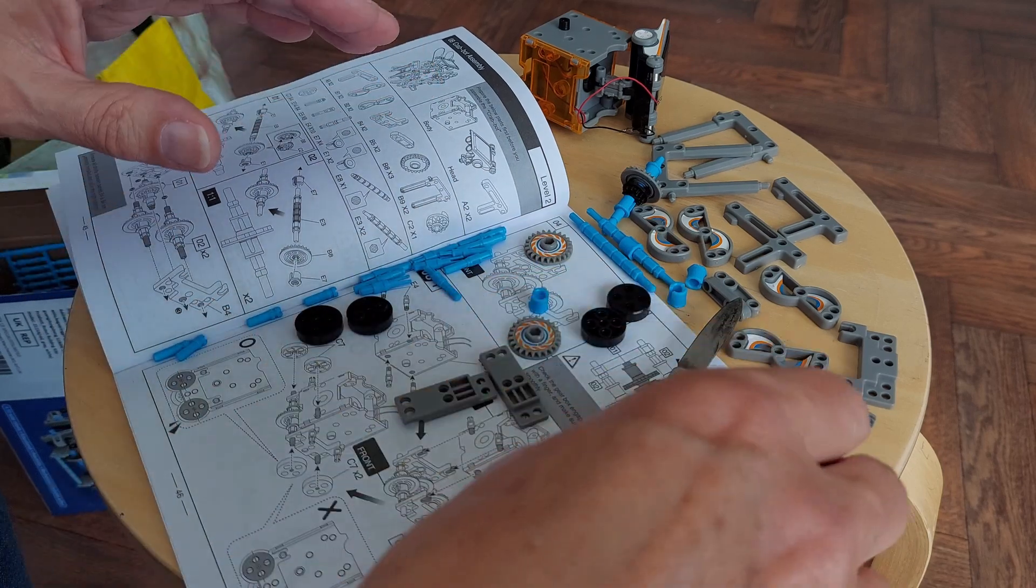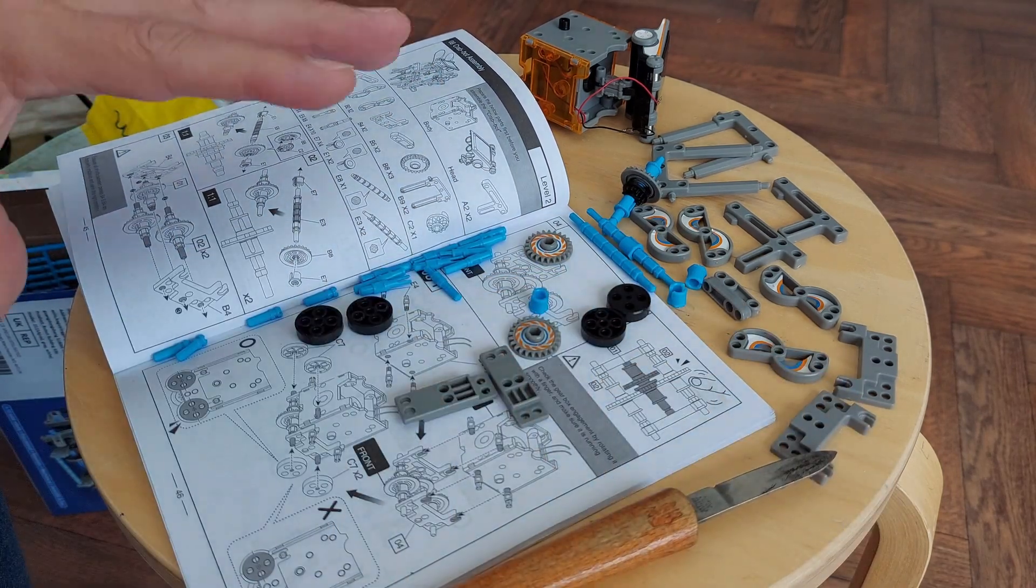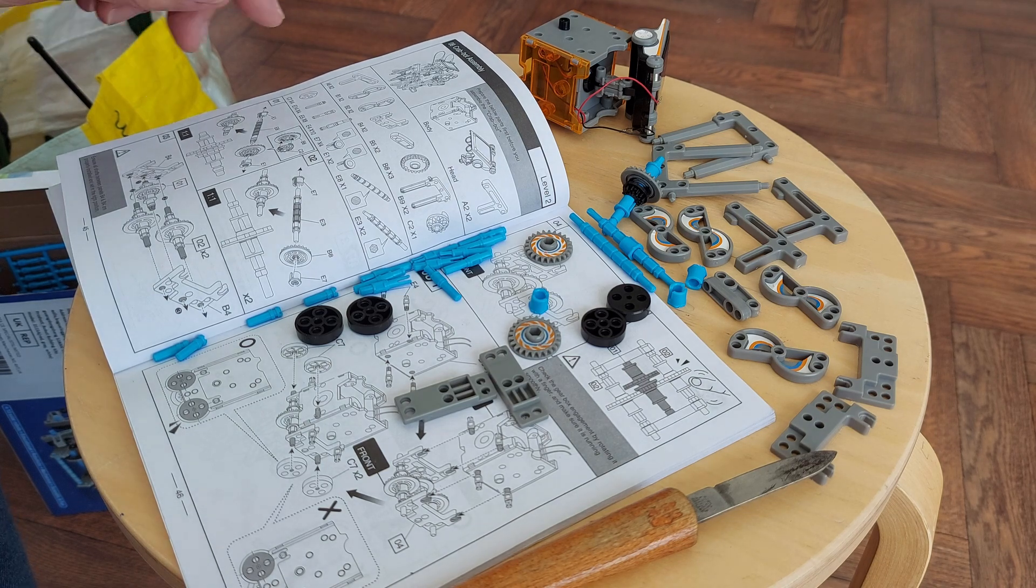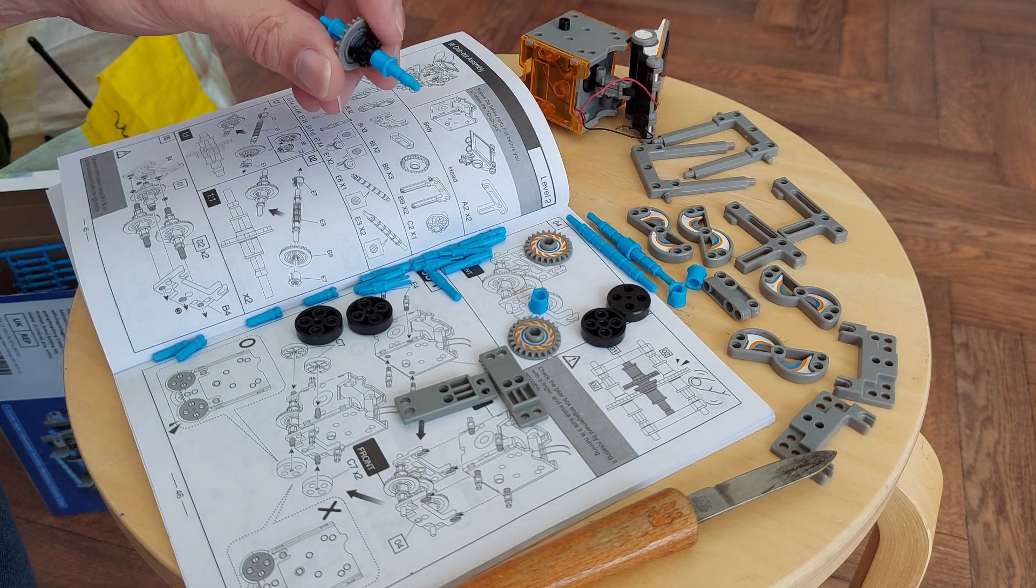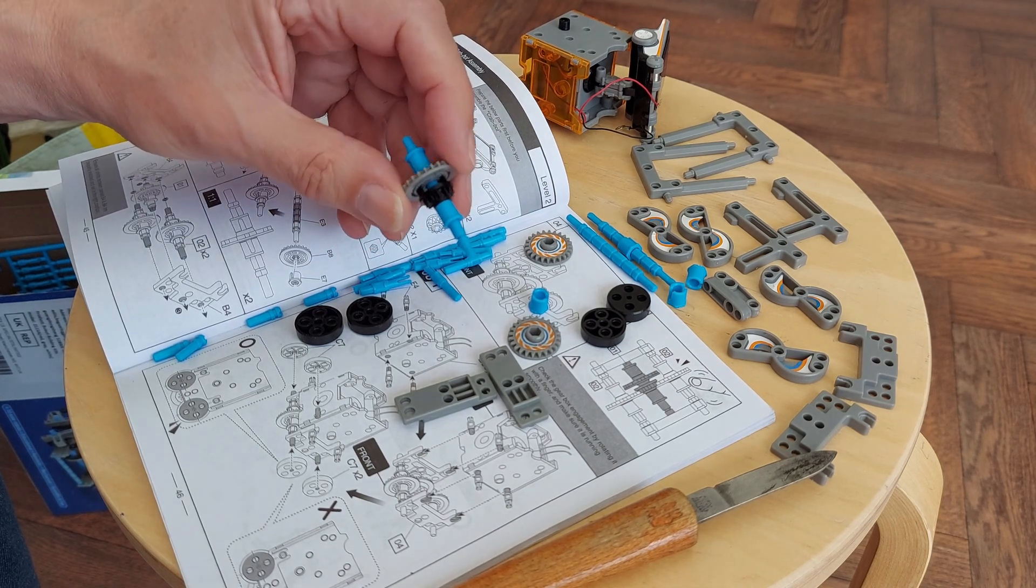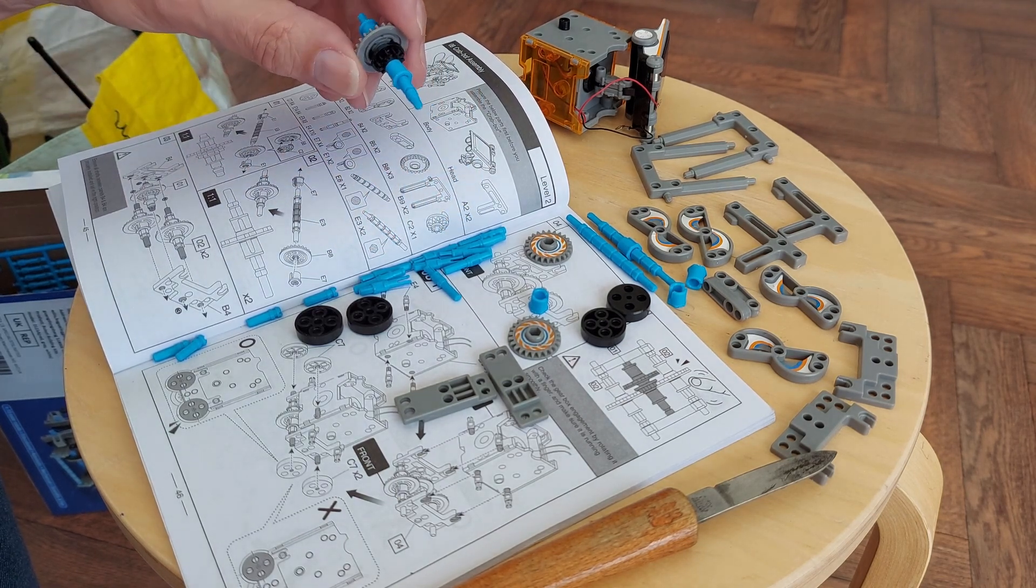So I think I've got all the bits out prepared, makes a change. First thing to make is that one, which is actually same as one of the ones from the Autobot, so that one's ready made.